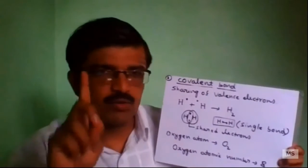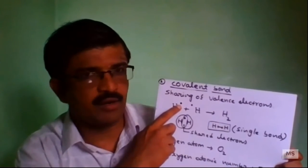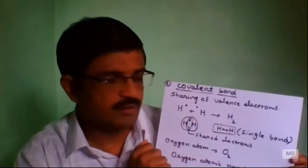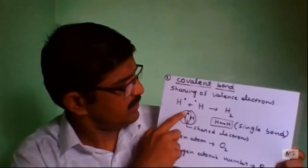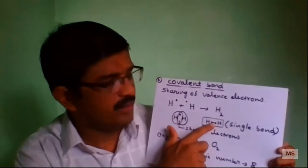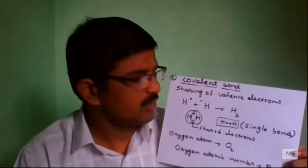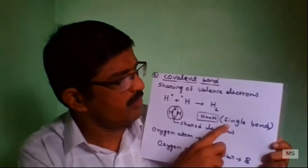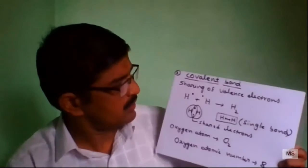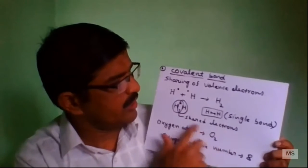Hydrogen's atomic number is 1, so it has one electron. This hydrogen has one electron, and the other hydrogen also has one electron. When these electrons are shared, a bond formation takes place. That forms a single bond. These two electrons are called shared electrons.